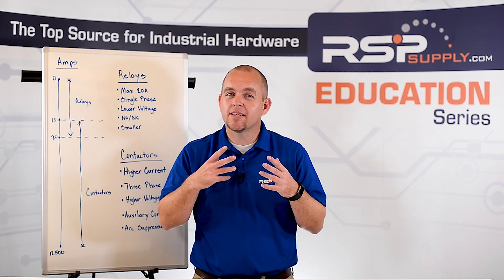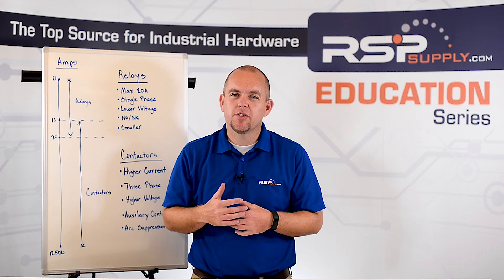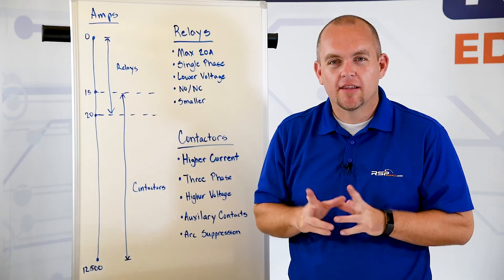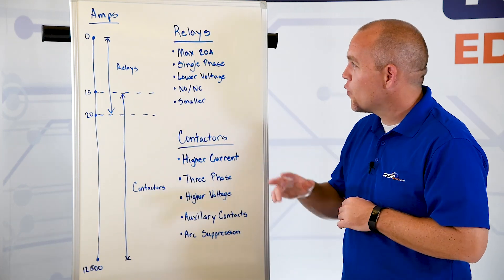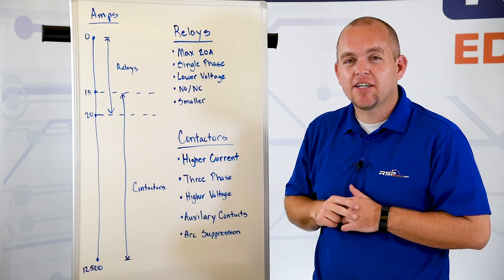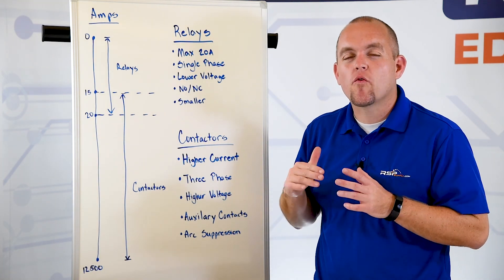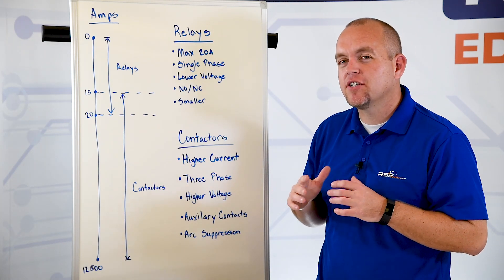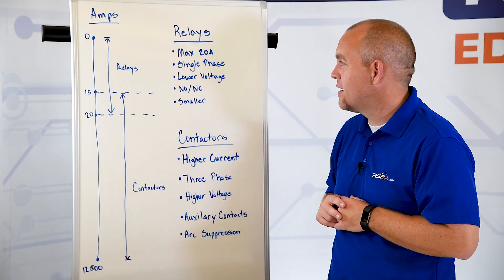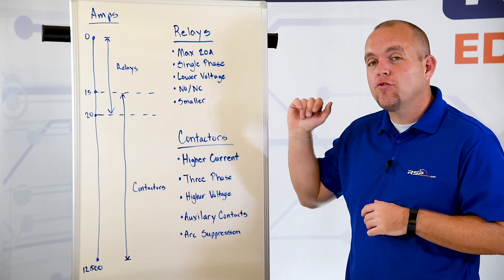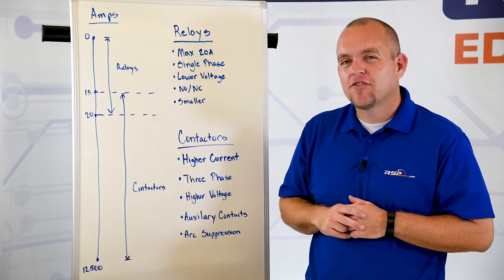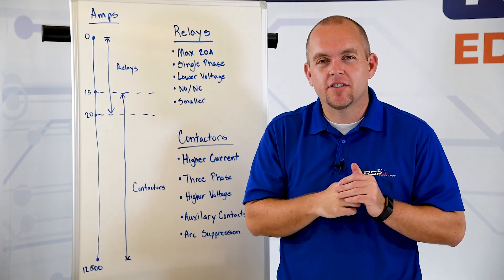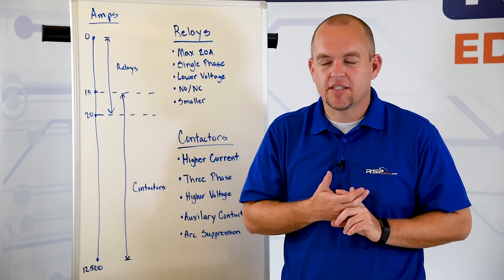Although there are many similarities, the main differences between contactors and relays are the loads that they're actually intended to handle. Relays are typically used in applications where the load current rating is no more than 20 amps — however, typically we see those used in applications of no more than 15 amps. They are most commonly used in single phase applications, mostly seen in lower voltage situations such as safety and automation systems.